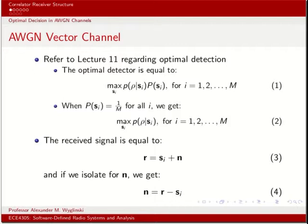Referring to lecture 11, the optimal detector — in the case of maximum a posteriori detection, when the possible signal waveforms are not equally likely — is given by equation 1: we maximize across all possible Si values the PDF of rho given Si was transmitted, multiplied by the probability that Si was transmitted, for i ranging from 1 through m. When we have equally likely symbol transmissions, we get a maximum likelihood detector (equation 2), which is the same except P(Si) equals 1/m. Since that's a constant, it doesn't influence the maximization, so we can safely discard it.